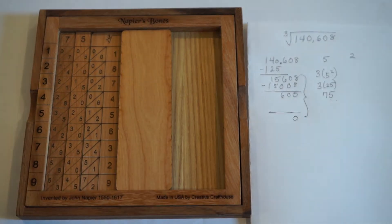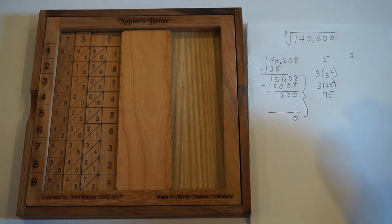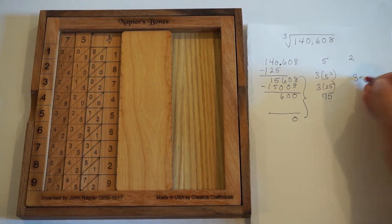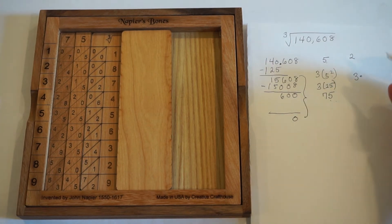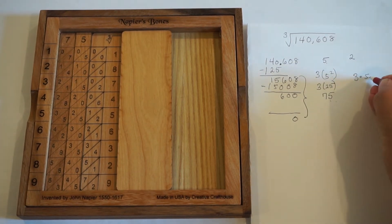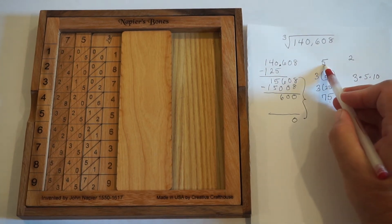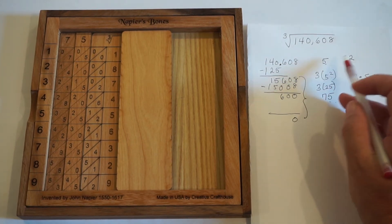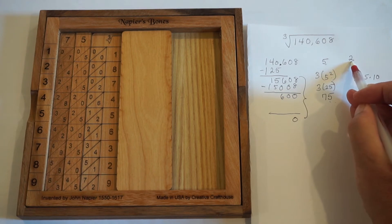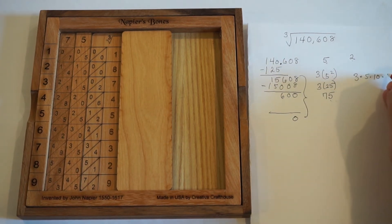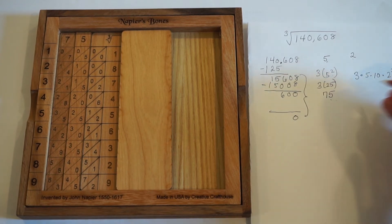And at this point, what we need to do is that we need to multiply 3 times our first number, which is 5. We multiply that by 10, which actually has to do with place value, because the 5 is in the 10s place. And then we multiply this by this last number, the one we just found. We multiply it by that, but we square it.